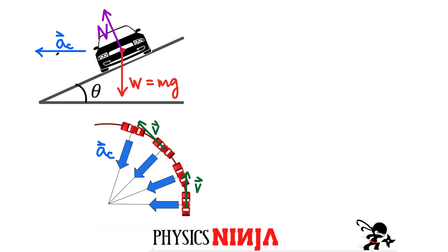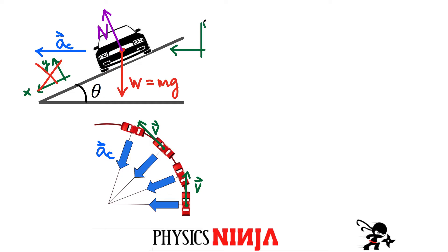So the net force has to also be acting toward the center of the circle. Now I have to break things down into components — which coordinate system should I use? Usually for an object on a slope you'd use axes along and perpendicular to the slope, but for this problem that's not a good idea because the acceleration is at an angle toward the center of the circle. It's always best to choose a coordinate system where at least one axis aligns with the acceleration direction. So I'm going to call horizontal the positive x direction and vertical the positive y direction.